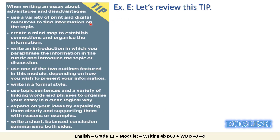Let's review this tip before writing our essay. When writing an essay about advantages and disadvantages, you can use a variety of print and digital resources. Print resources include books, reference books, and dictionaries. Digital resources refer to soft copies of books and online sources. Use these resources to find information on the topic, then create a mind map to establish connections and organize the information.